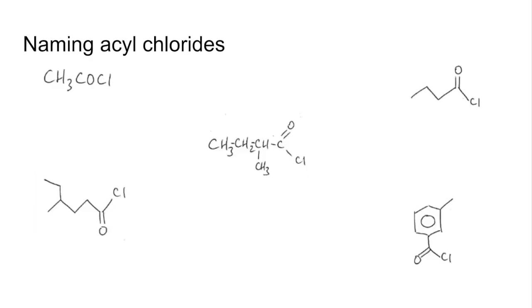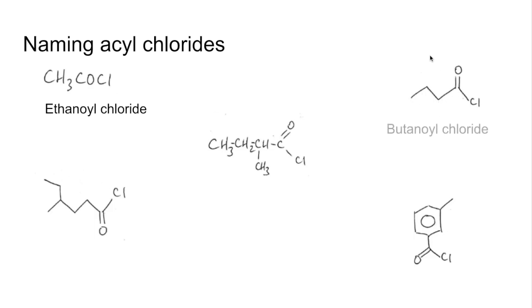Quick exercise on naming acyl chlorides. So this one here has 2 carbons: ethanoyl chloride. Next one here has 1, 2, 3, 4 carbons, so this is butanoyl chloride.